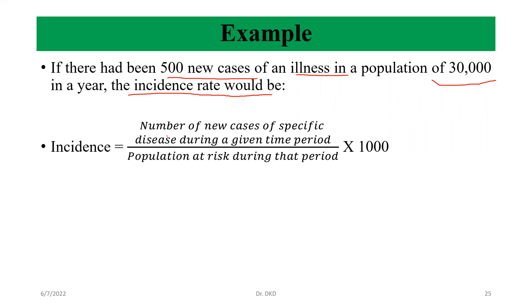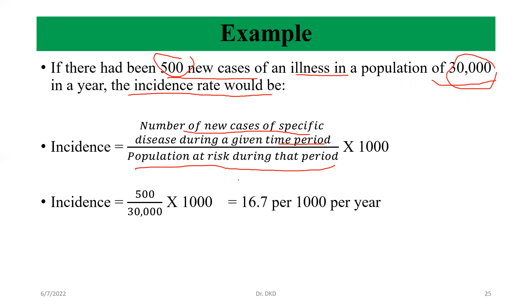We can calculate with help of the formula: number of new cases of specific disease during given time period divided by population at risk. So here 500 new cases is given and total population at risk is 30,000. So we can put the values here and calculate 16.7 per 1000 per year.